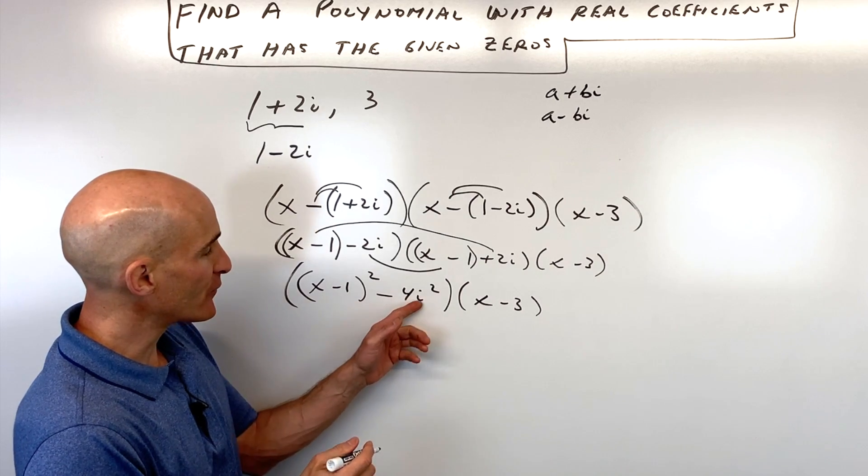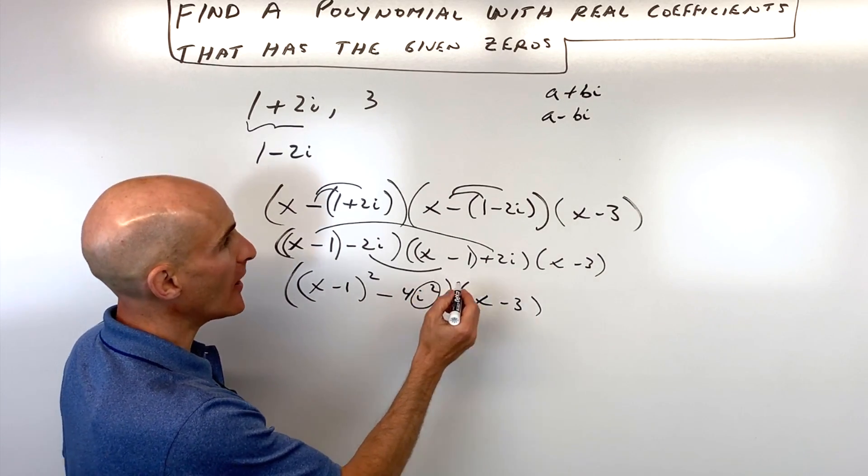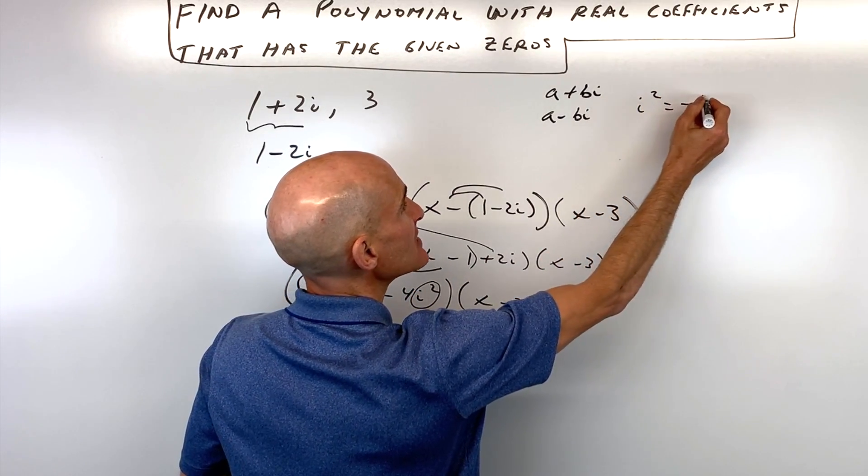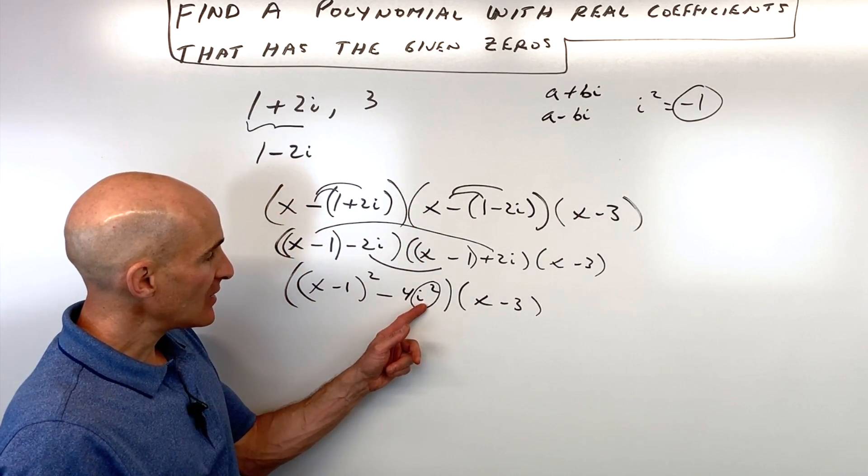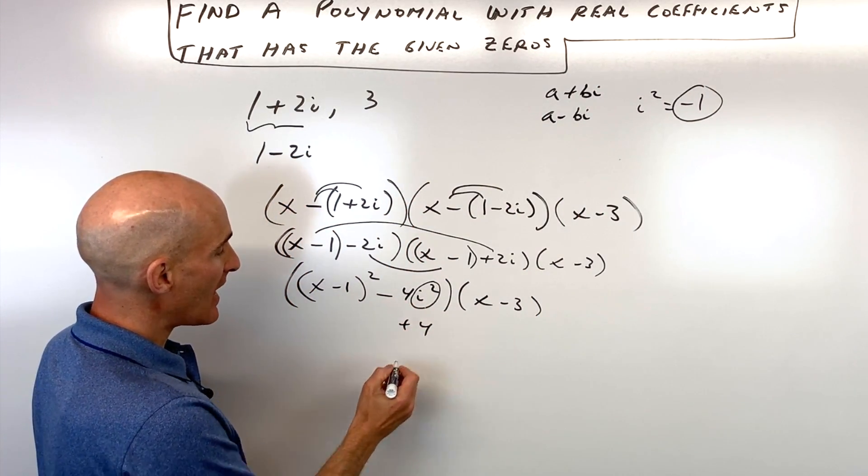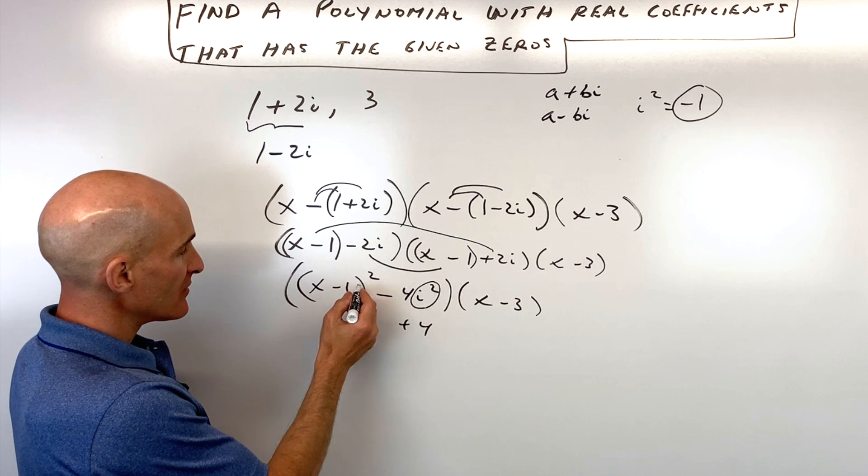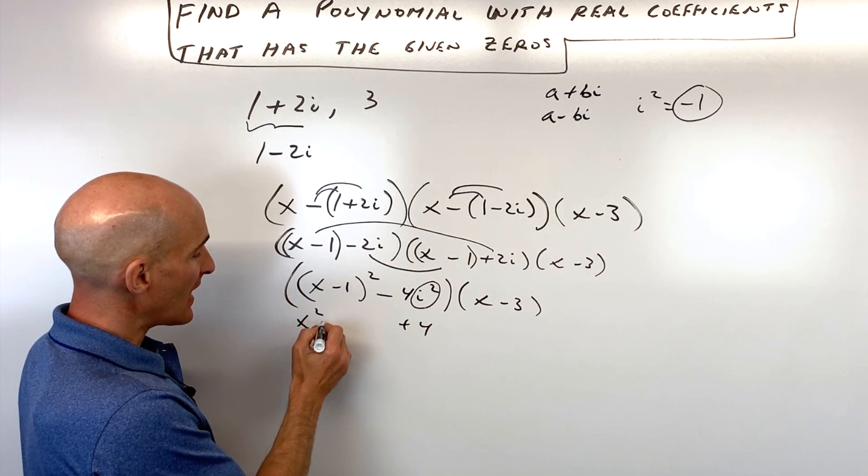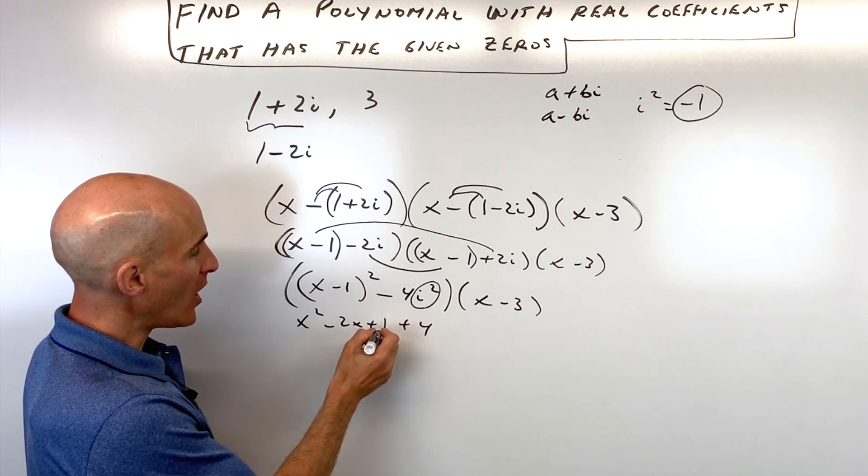So now let's simplify a little bit further. Remember, i squared equals what? This is definitely something you want to memorize. i squared is equal to negative one. So we have a negative one times a negative four, which is a positive four. If we FOIL out x minus one squared, we get x squared minus two x plus one.